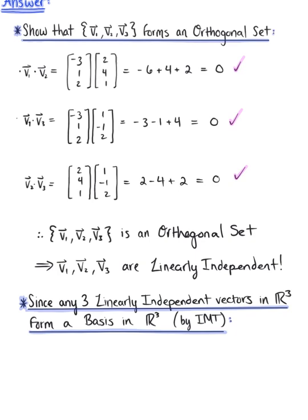Now, since any 3 linearly independent vectors in R³ form a basis in R³, it automatically follows that the set of vectors V₁, V₂, V₃, our orthogonal set of 3 linearly independent vectors, forms an orthogonal basis for R³.